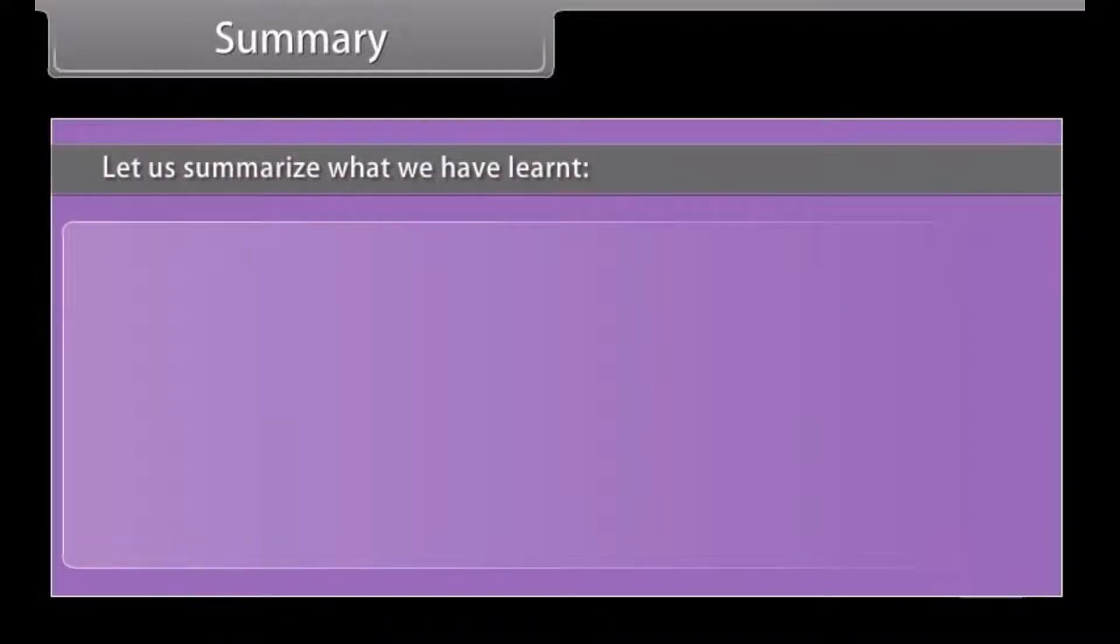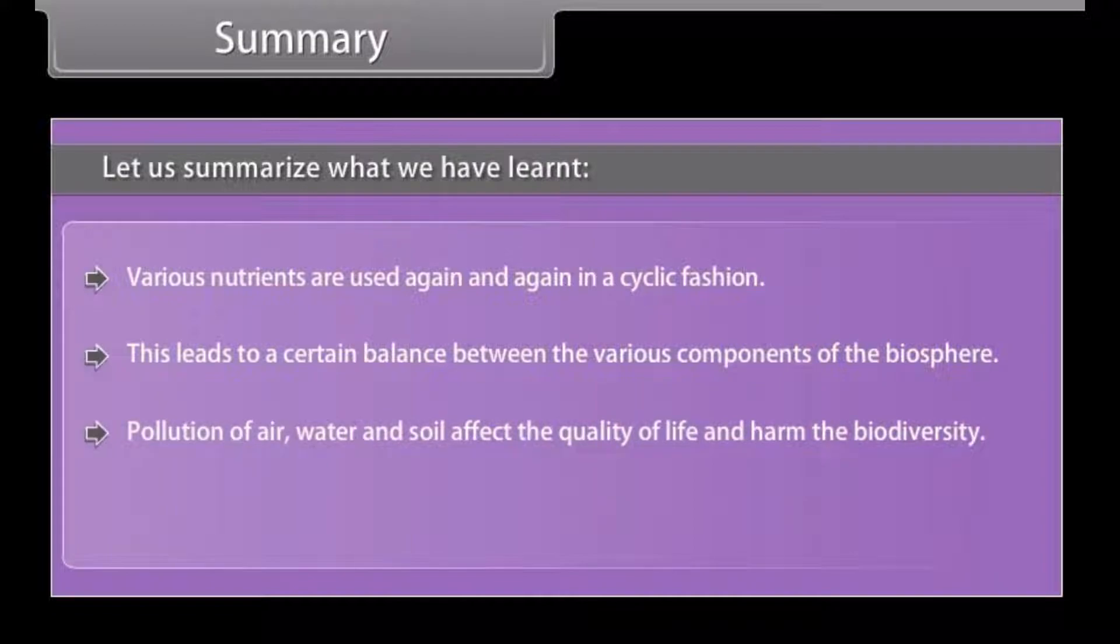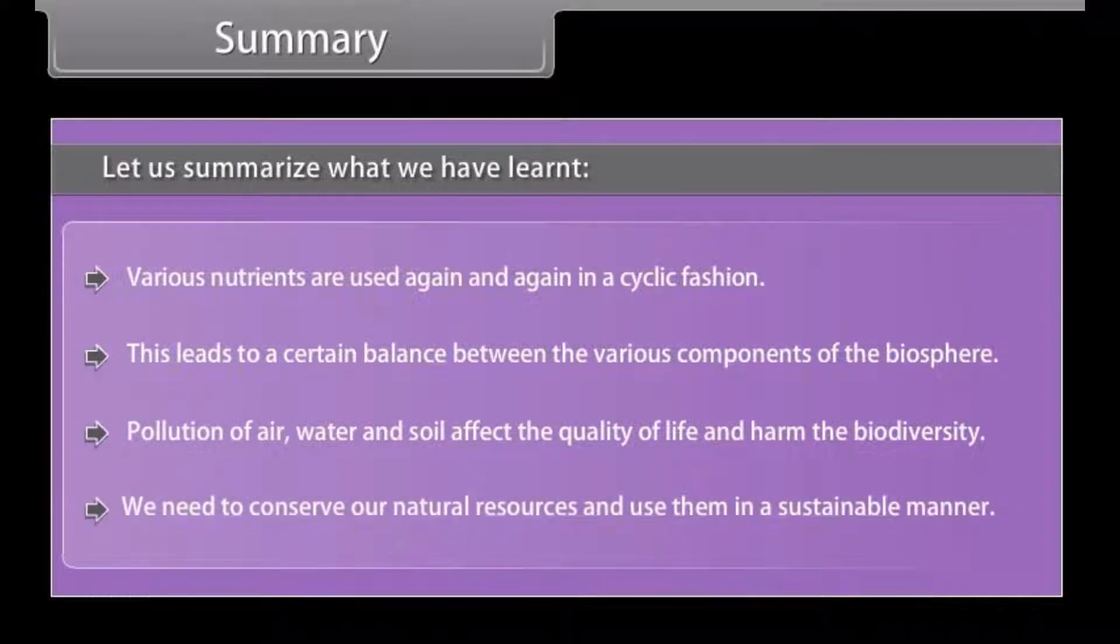Summary: Let us summarize what we have learned. Various nutrients are used again and again in a cyclic fashion. This leads to a certain balance between the various components of the biosphere. Pollution of air, water, and soil affect the quality of life and harm the biodiversity. We need to conserve our natural resources and use them in a sustainable manner.